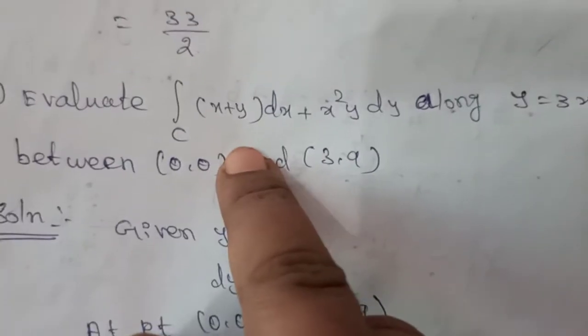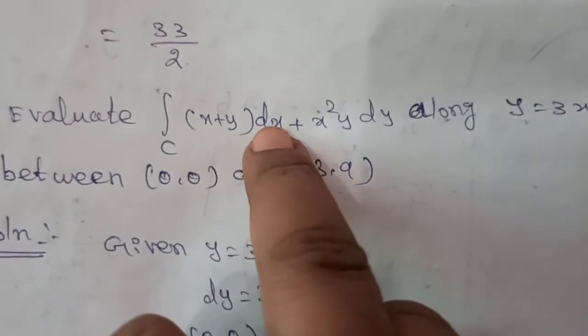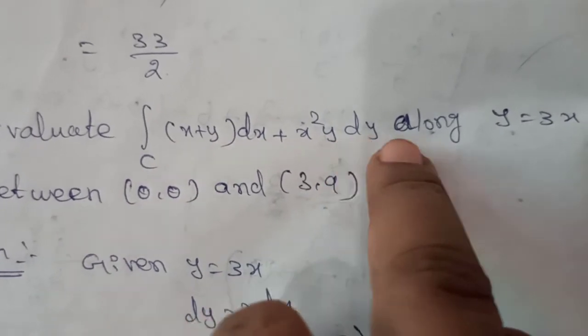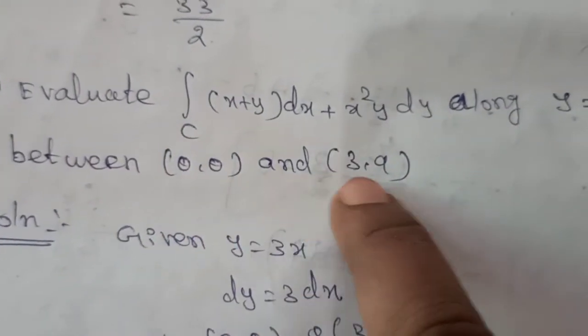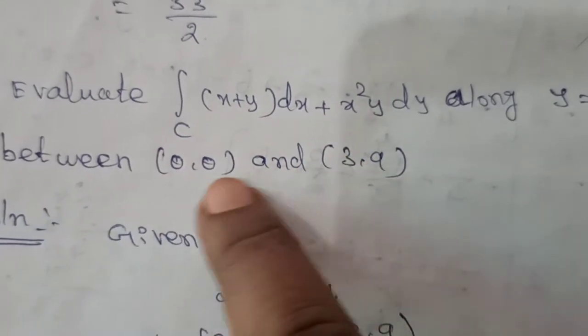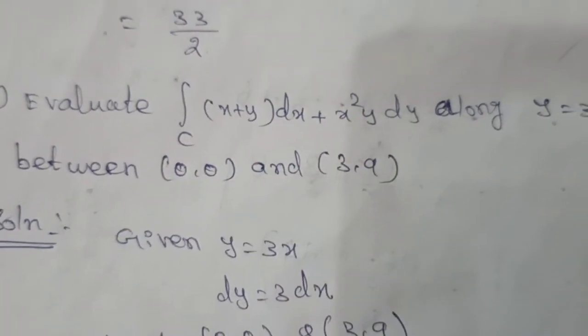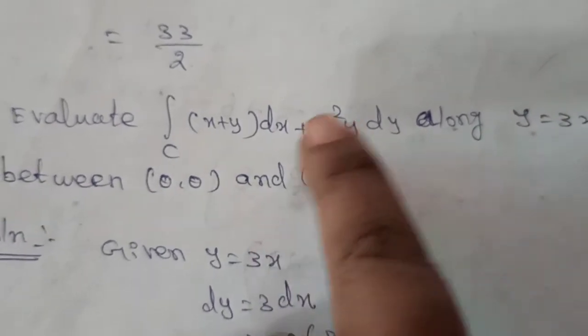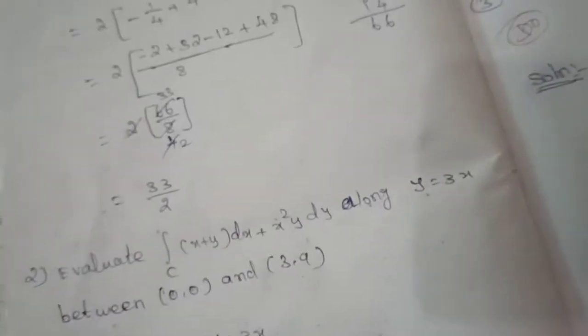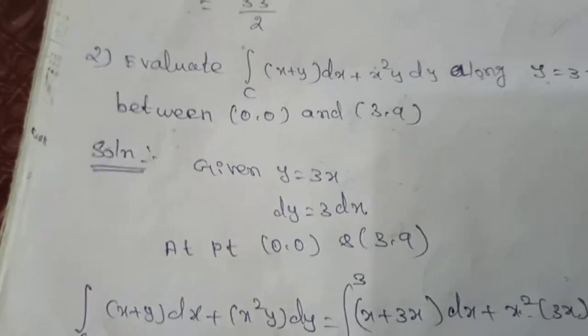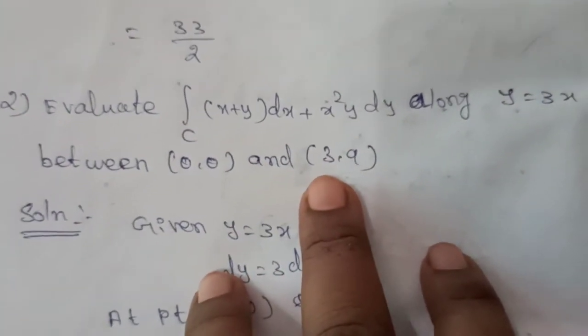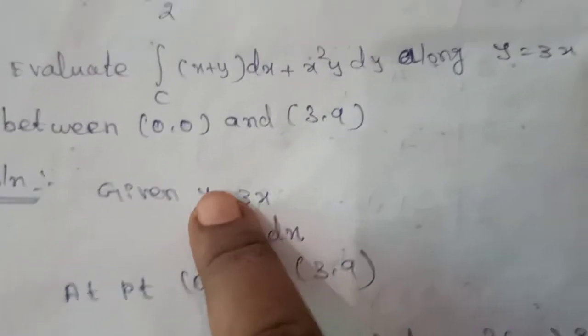Next problem: Evaluate integration of C: (x plus y) dx plus x squared y dy, along y equals 3x, between the points (0, 0) and (3, 9). Here x varies from 0 to 3 and y varies from 0 to 9. This problem is not replaced by t; it has only x and y variables.